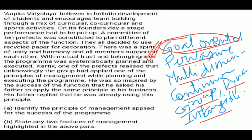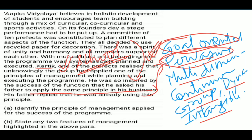Next, see this boy Karthik — he asked his father to apply the same principle in his business which he used in his school. That means the principle of management can be applied at all types of places: in a school, in a business organization, in a non-business, in profit-making, in non-profit-making. So what feature comes from this? Management is pervasive — management principles are applicable everywhere.